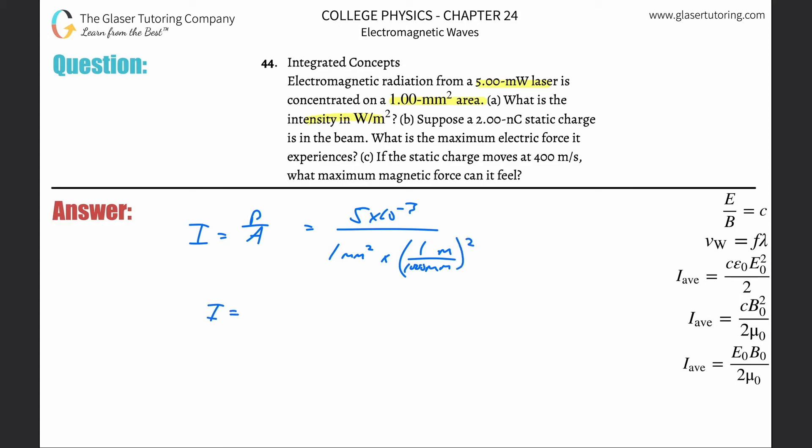So basically now we're going to take 5 times 10 to the minus 3, divided by parentheses 1 divided by 1,000 squared. We get a value of 5,000. So the intensity here is about 5,000 watts per meter squared. That takes care then of letter A.